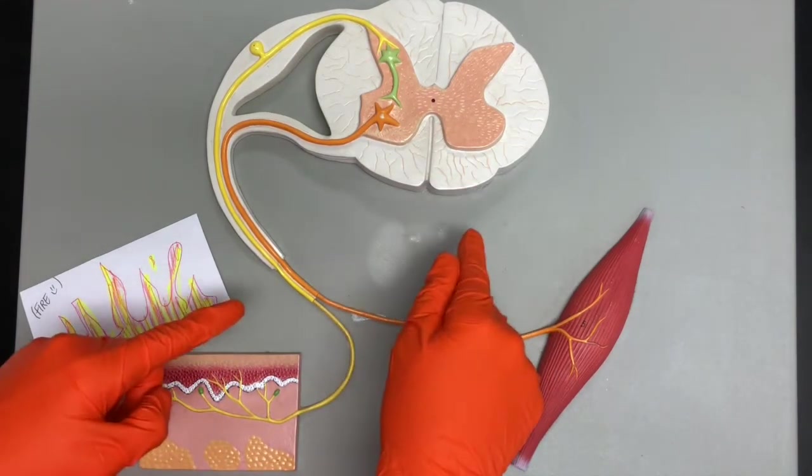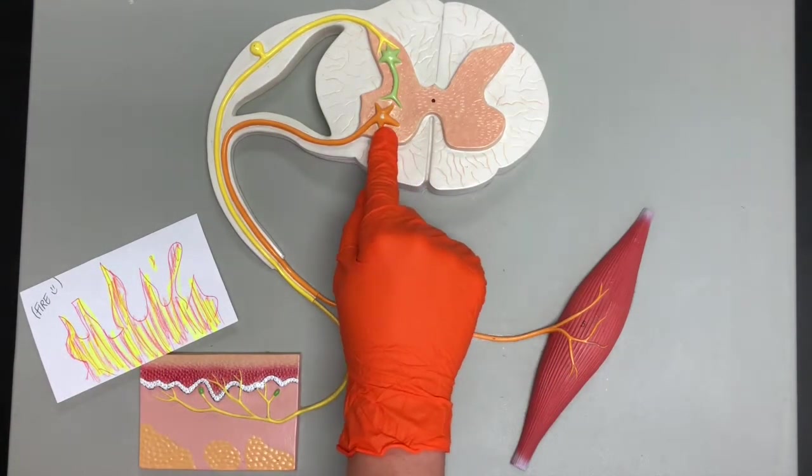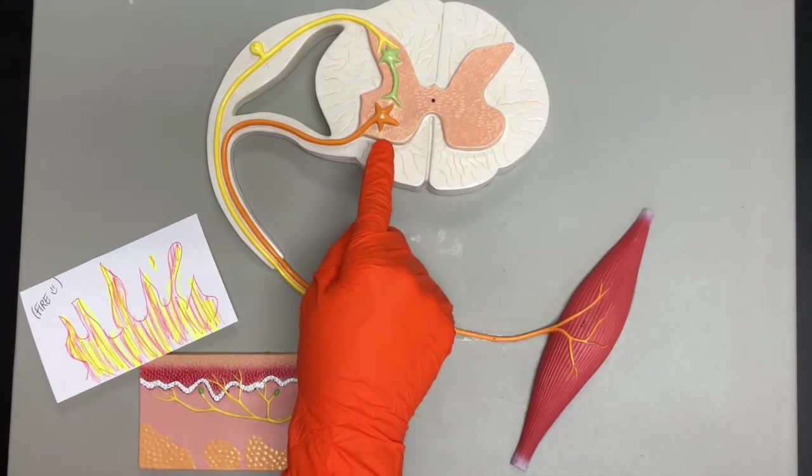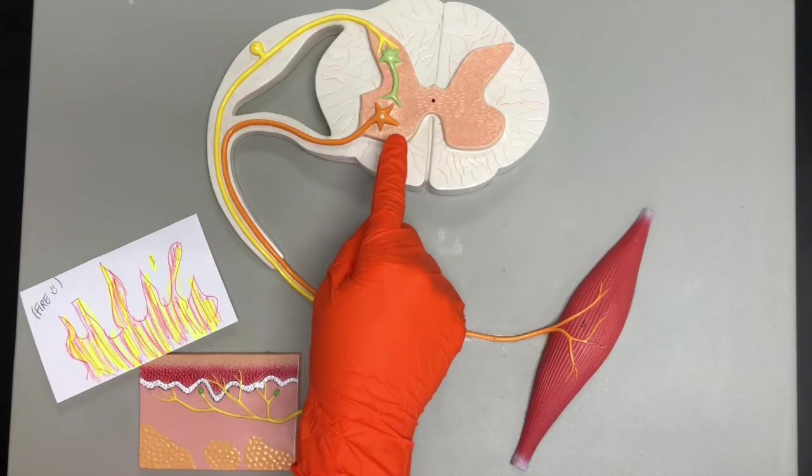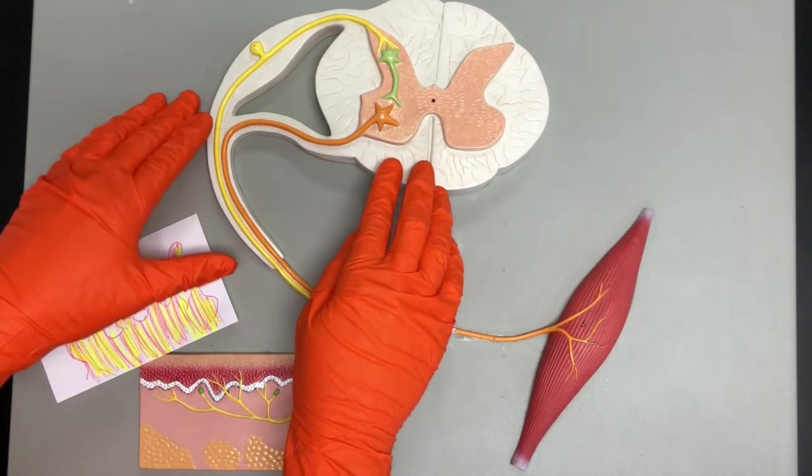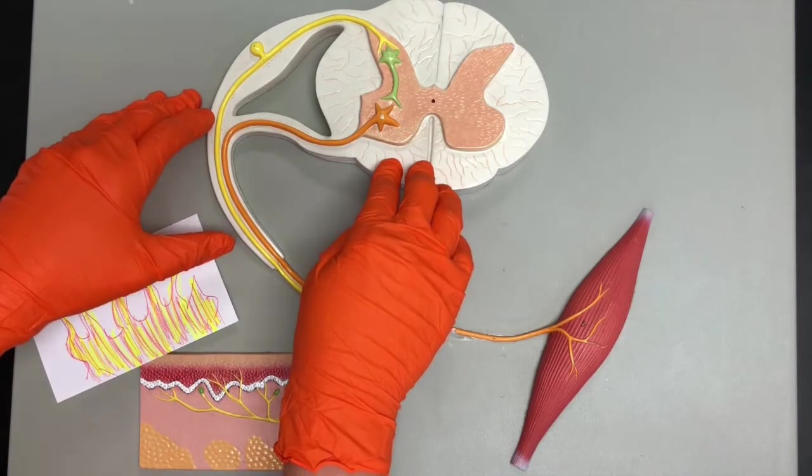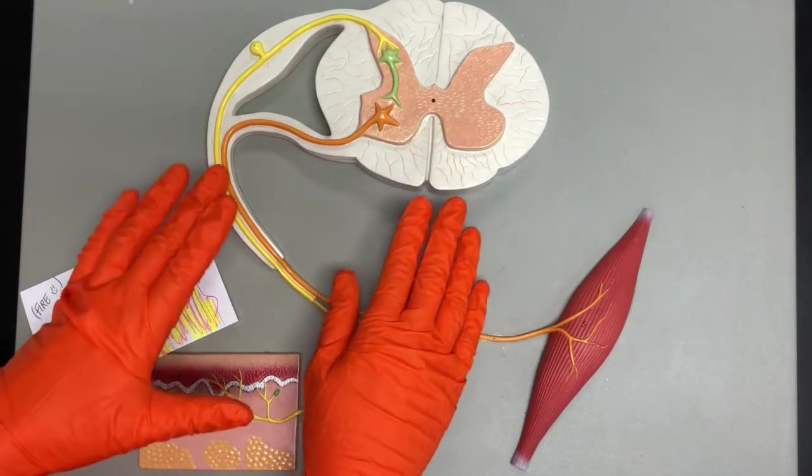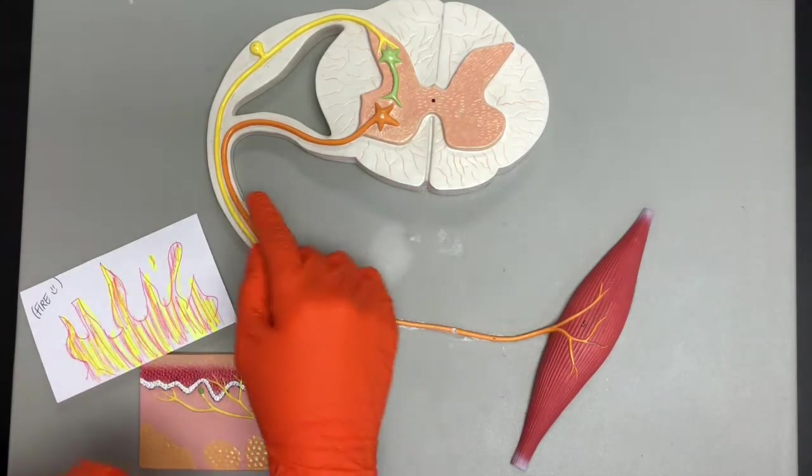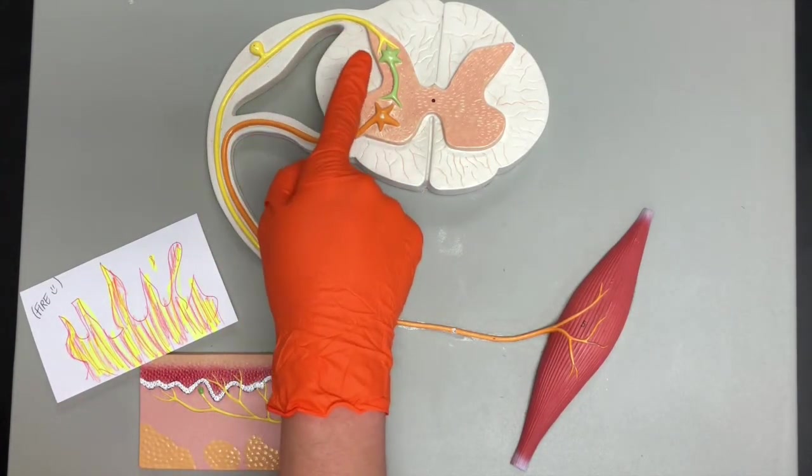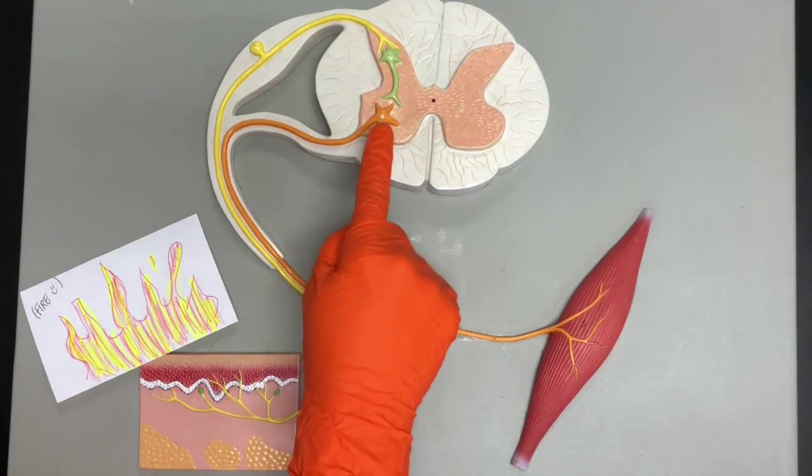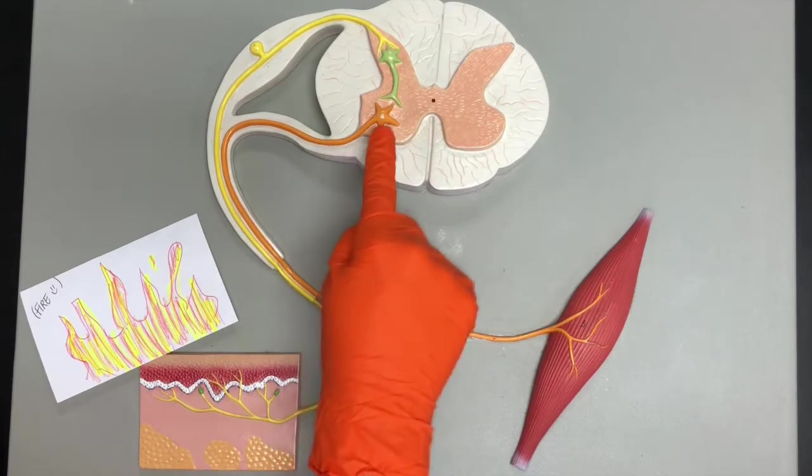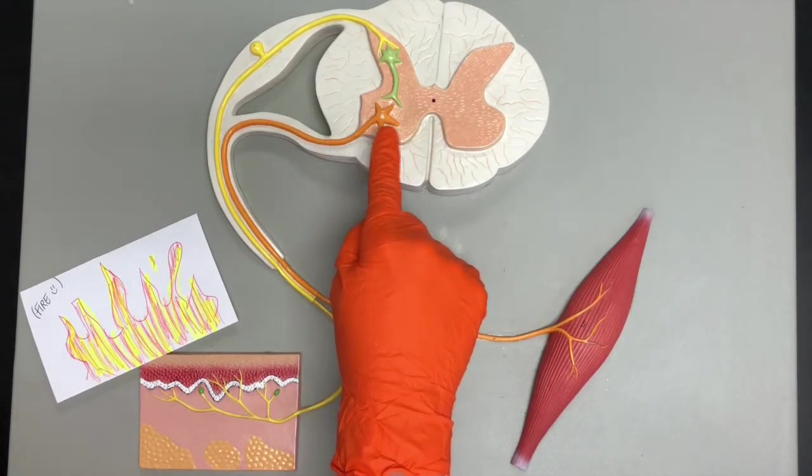M for motor, M for multipolar. Motor neurons are also known as efferent or e-ferent neurons. The reason why I like to mispronounce afferent and efferent and say a-ferent and e-ferent is because those two words sound very similar. The a-ferent goes towards the CNS and the e-ferent, E for e-ferent, E for exits, meaning this signal is going to leave or exit the central nervous system.